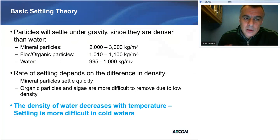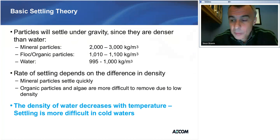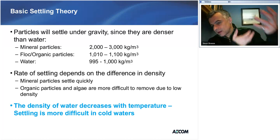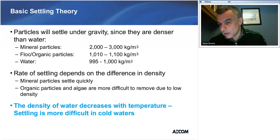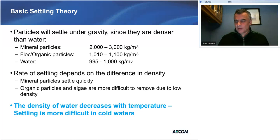The basic premise of sedimentation is that particles are hopefully denser than water and will settle naturally. But not all particles are created equal. Mineral particles like sand and silt tend to be quite dense — around 2,000 to 3,000 kg/m³, at least twice the density of water — so sand drops out fairly quickly. Floc formed from coagulation, organics, or algae are very close to the density of water. Algae in certain conditions can actually become less dense than water and float to the surface.